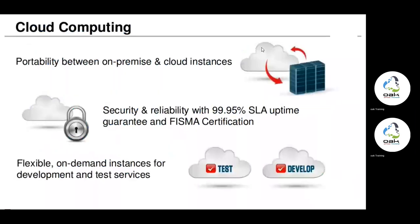APN is a full-stack development tool, meaning it handles both front end and back end — similar to how Java or Python support full-stack development. In APN, we can install it in two ways: on-premise or cloud. On-premise means the control and servers are handled from our side.